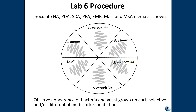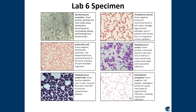For the lab six procedure, we're going to work in larger groups because there are a lot of different types of media and specimens. We're going to inoculate nutrient agar, potato dextrose agar, Sabouraud dextrose agar, phenyl ethyl alcohol agar, eosine methylene blue agar, MacConkey agar, and mannitol salt agar with all six of the species. I'll walk you through it — I have it down to where it's really efficient. All of those plates are going to be incubated and when we come back we're going to observe the appearance of all the bacteria and yeast grown on these plates across all six species.